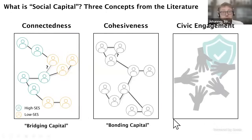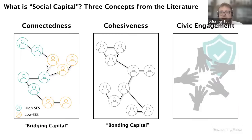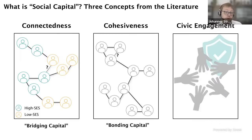The first part of the project involved figuring out what people actually mean when they use the concept of social capital, building on decades of work across the social sciences. We distilled the many notions of social capital in the literature down into three concepts we can measure relatively well in the data. The first is what we call economic connectedness — also called bridging social capital — which captures the extent to which individuals with different characteristics, such as high or low income, are friends with each other.